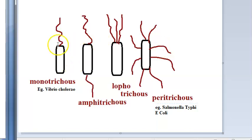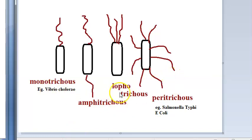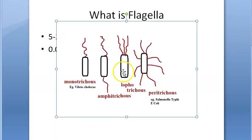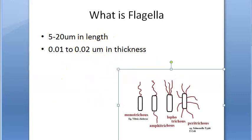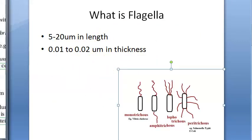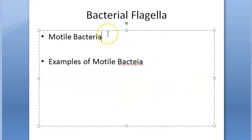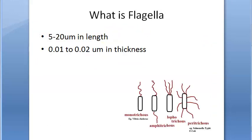Vibrio cholerae has monotrichous flagella, and remember Vibrio cholerae shows darting motility. Now let us move on to bacterial flagella structure.